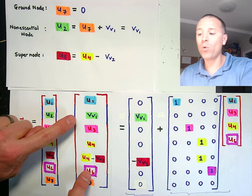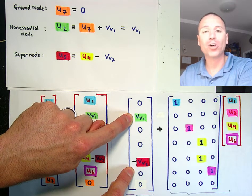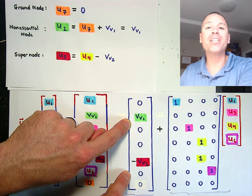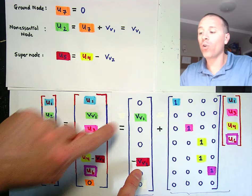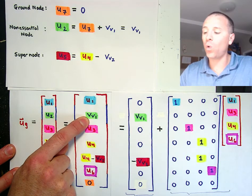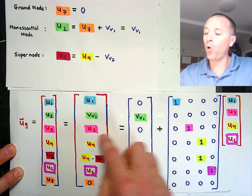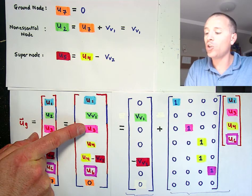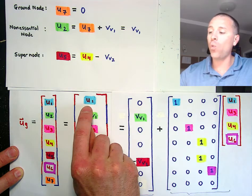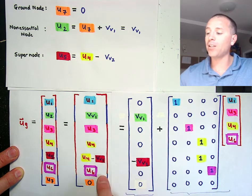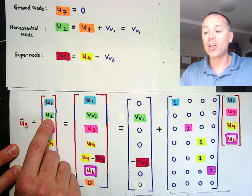Everywhere that we see voltage source information we capture that in what we call a particular vector — a vector whose entries are defined with respect to our particular choice of independent node potentials and voltage source values. We can decompose this: voltage source 1 and voltage source 2 were in positions two and five, the dependent positions. We pull that information off, and then notice we have four independent node potentials. We track that using matrix-vector multiplication. u1 shows up in position one only; the dependent node variable u2 is non-necessary so it's eliminated.